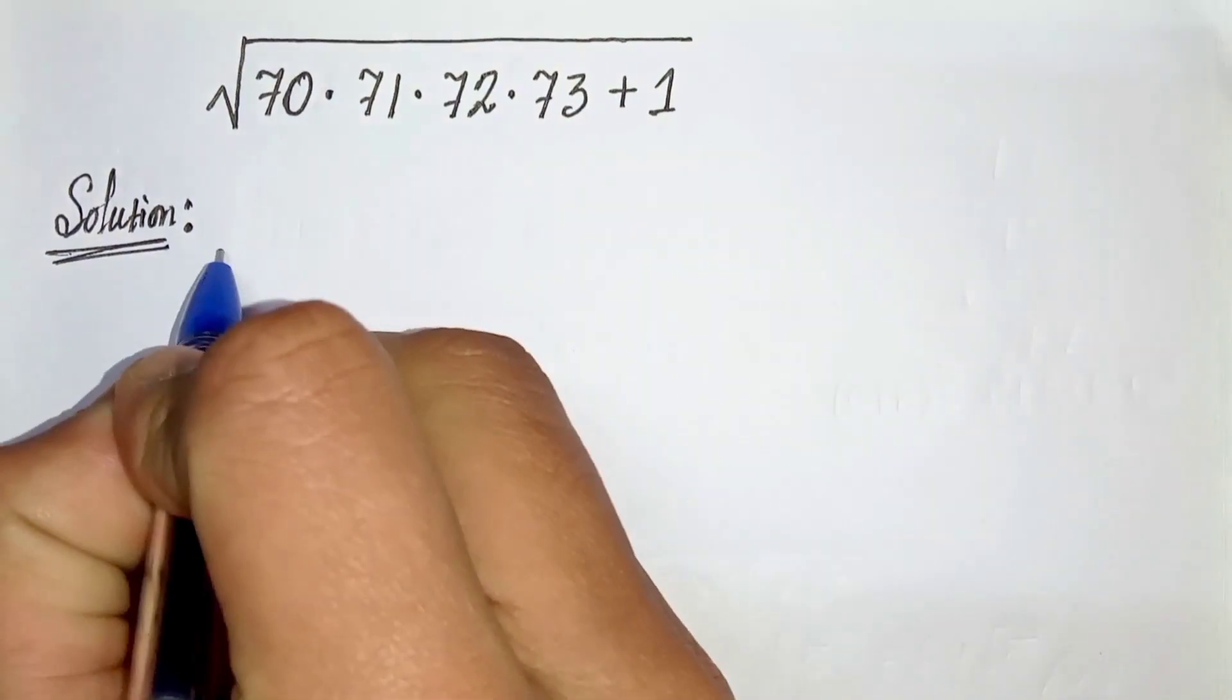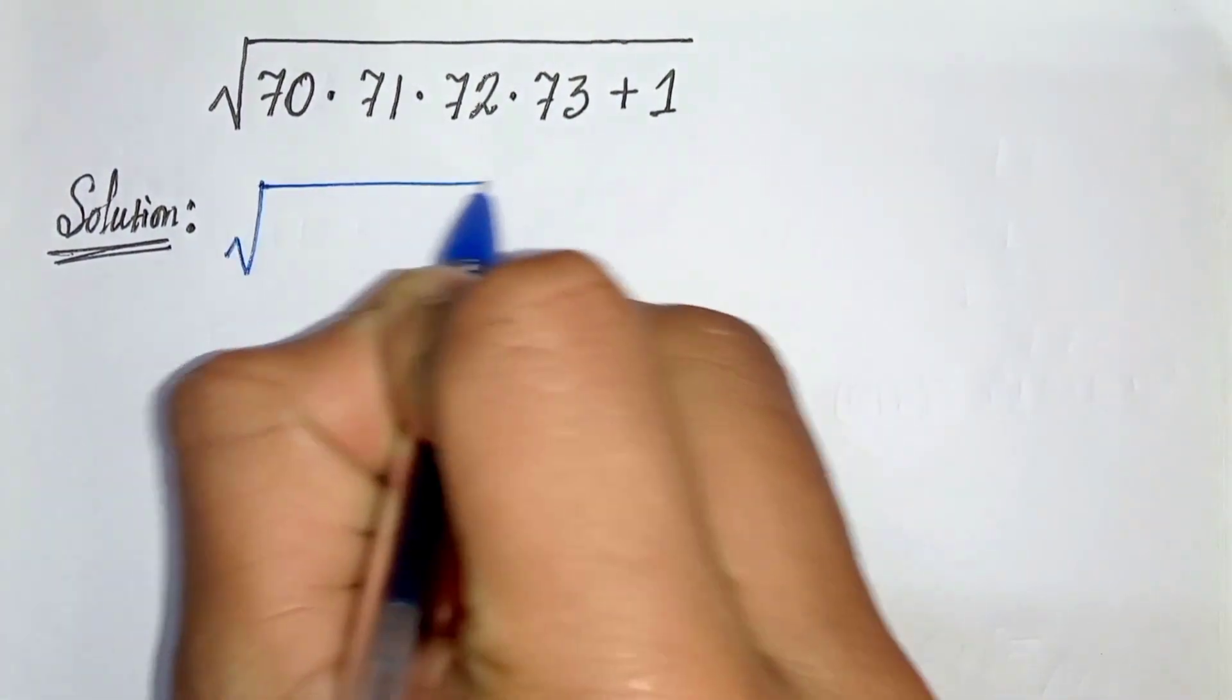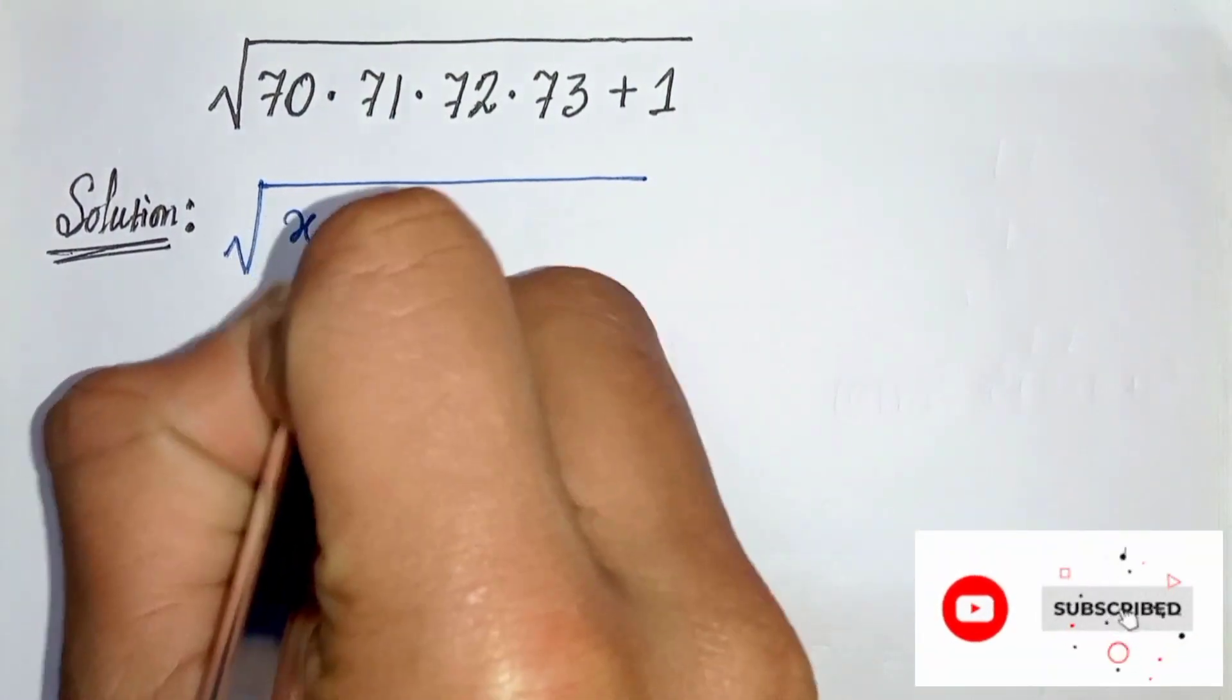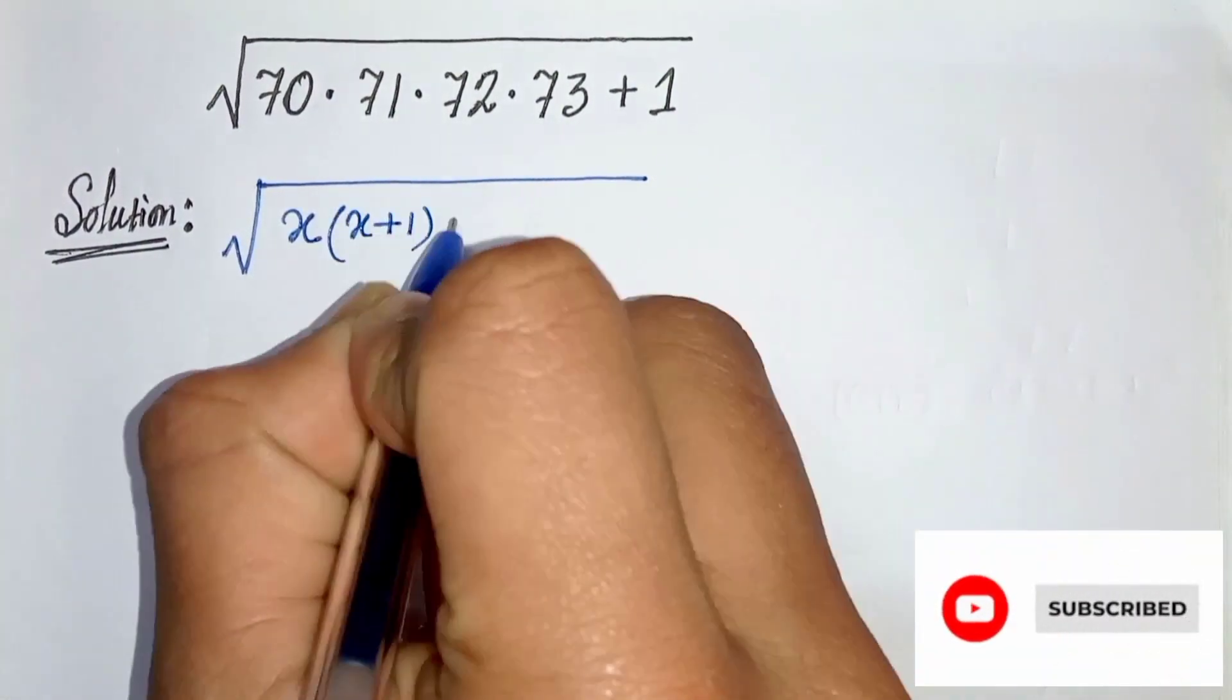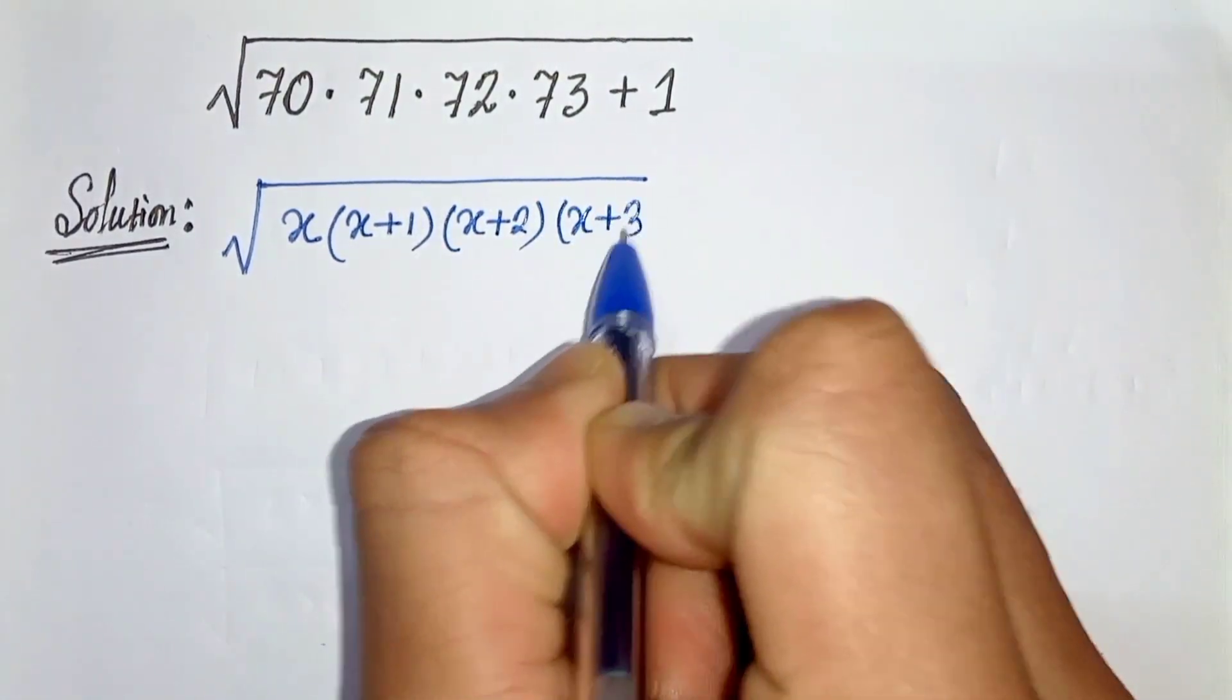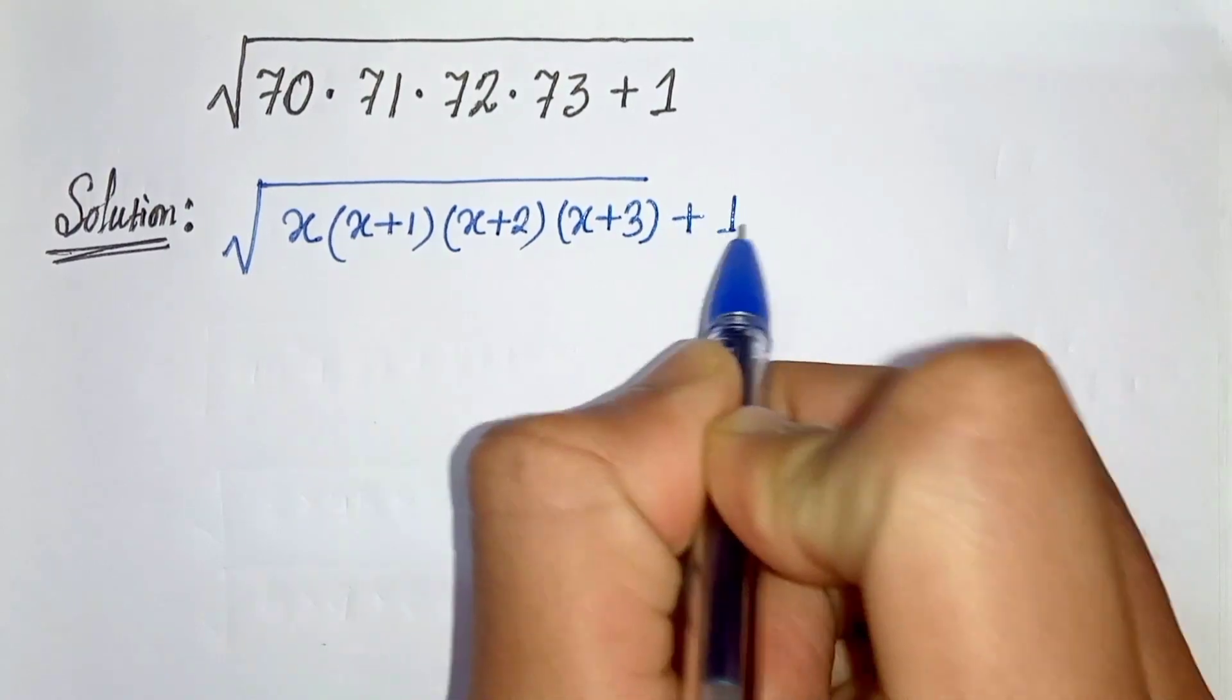So let us write this first. Root under 70 as x, then 71 as x plus 1, 72 as x plus 2 and 73 as x plus 3 and plus 1.